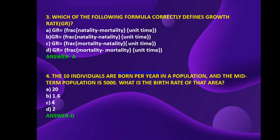Next: which of the following formula correctly defines growth rate (GR)? Option A: growth rate equals fraction of natality minus mortality into unit time. Option B: growth rate equals fraction of natality minus natality into unit time. Option C: growth rate equals fraction of mortality minus natality into unit time. Option D: fraction of mortality minus mortality into unit time. The answer is A — growth rate is the fraction of natality minus mortality into unit time.